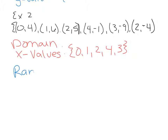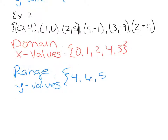The range is the set of y values. We'll go through and identify all the y coordinates, and we will not list them twice if they appear twice. So the range would be 4, 6, 5, negative 1, negative 9, negative 4. A lot of times we really want to list these in numerical order, so you can list them out and then make a new list in numerical order.